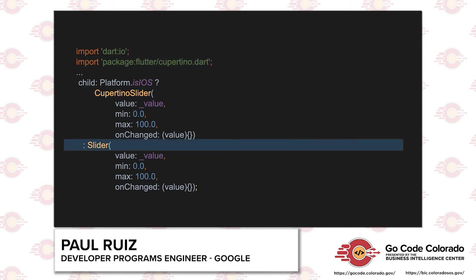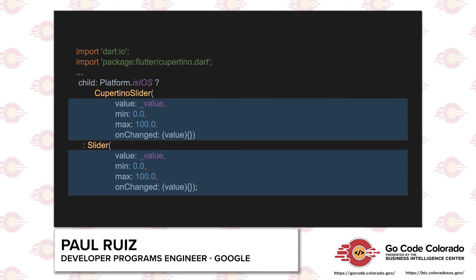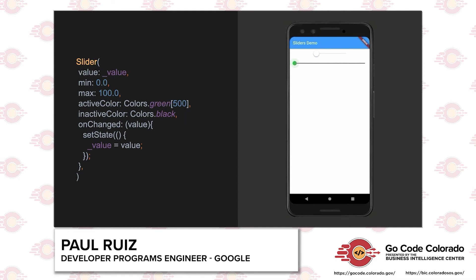If the user isn't on an iOS device, you can render a regular Material slider as the second option in the ternary operation. Both sliders have properties that can be set on them, though there are some differences — such as a background color property that only applies to the regular slider. For a complete slider example: the value is a double saved outside the widget, the active and inactive colors are set for the Material design version, and the onChange property maintains state as the slider is used. If onChange isn't set, the slider is unusable.